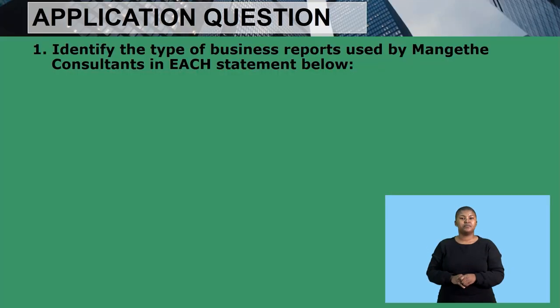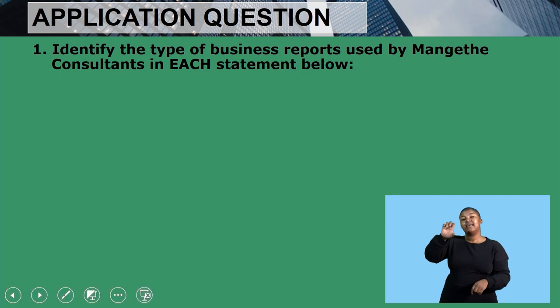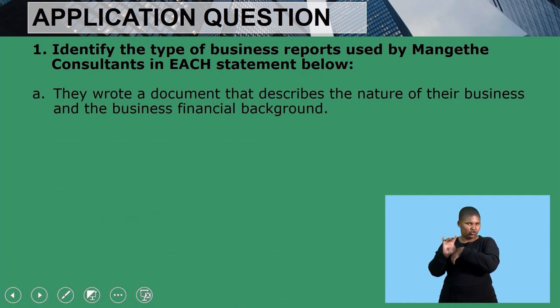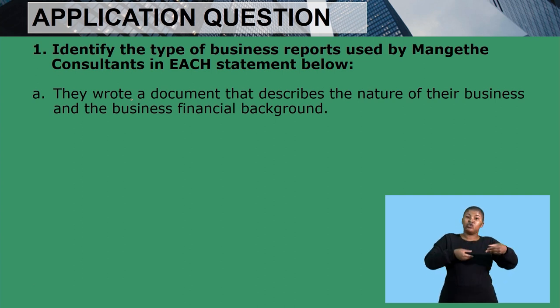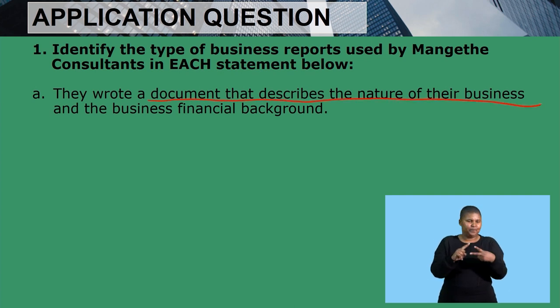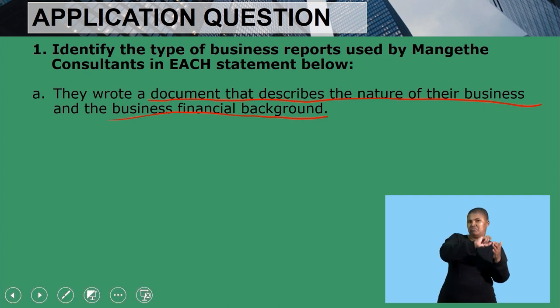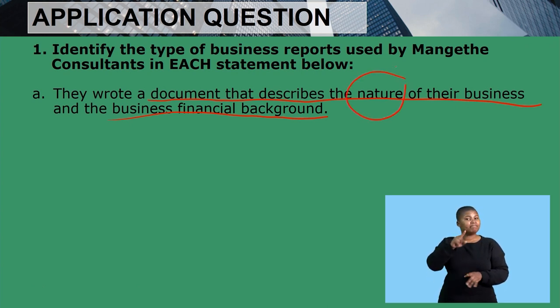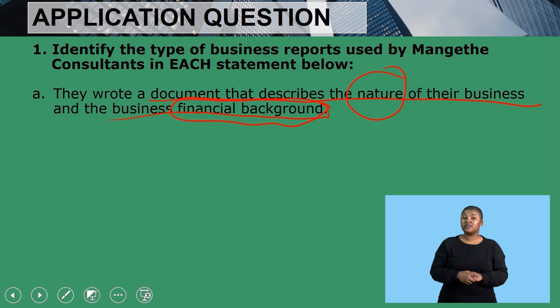Welcome back Grade 11. Let's look at our applications question. The first application question asks to identify the type of business reports used by Mangete Consultants. They wrote a document that describes the nature of the business and the business's financial background. Because it describes the nature and financial background of the business, we would say this is a business plan.